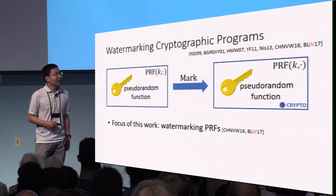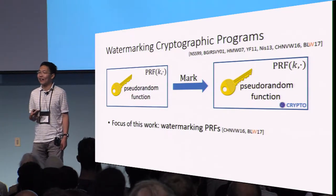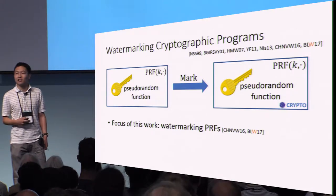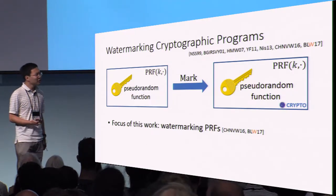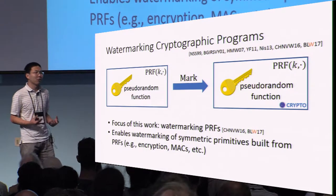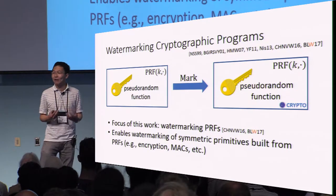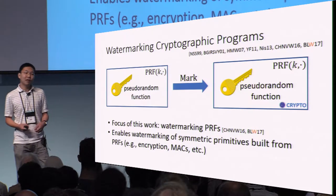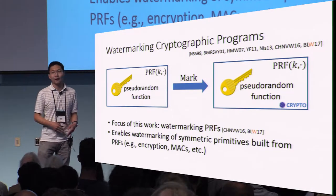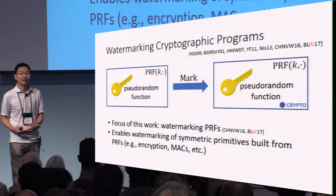As such, a focus of this work will also be on watermarking a natural class of cryptographic primitives. Here we're going to focus on pseudo-random functions. Why pseudo-random functions? Well, PRFs are basically the workhorses of symmetric cryptography. Once we can watermark pseudo-random functions, we can watermark the decryption functionalities of, say, a DVD player, or the authentication functionalities of a car key. So PRFs are a natural target for the first step in realizing watermarking for cryptographic functionalities.